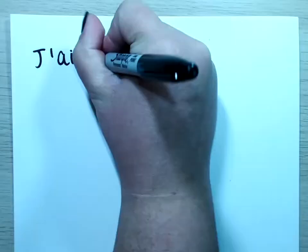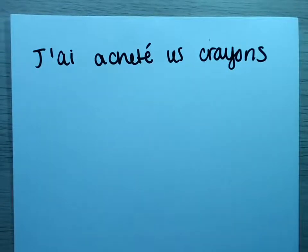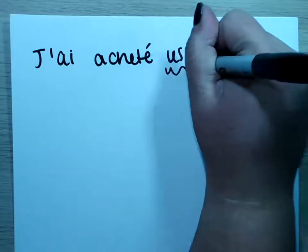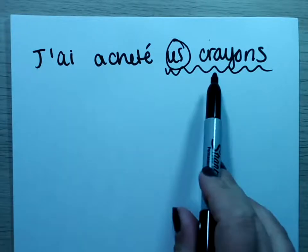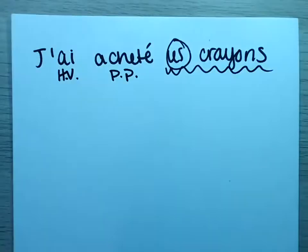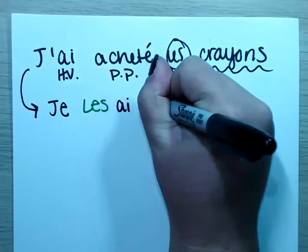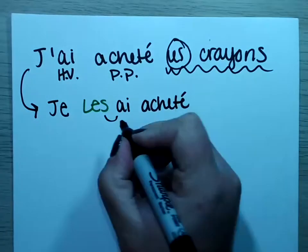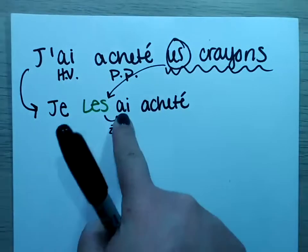Let's start with a sentence in the passé composé: j'ai acheté les crayons — I bought pencils. We can replace les crayons with les because it's plural. We take our direct object pronoun — remember, it answers the question 'what' — and put it before our helping verb. Remember, we have our helping verb and our past participle. So your sentence, once transformed, becomes j'ai les acheté. When we have that s and that a together, it makes a z sound: j'ai les acheté. So les gets placed right in front of our helping verb.